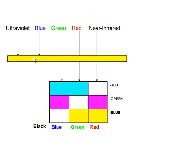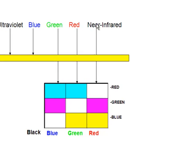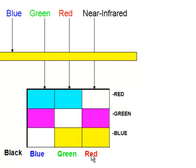With color-infrared photography, there's a yellow filter in the lens that filters out anything in the blue spectral region. Objects reflecting mainly in the blue, such as clear water, will appear black on color-infrared film. Objects highly reflective in the near-infrared will appear red on color-infrared film. Something reflecting highly in the red, such as senescent vegetation, will appear a greenish color on color-infrared film.